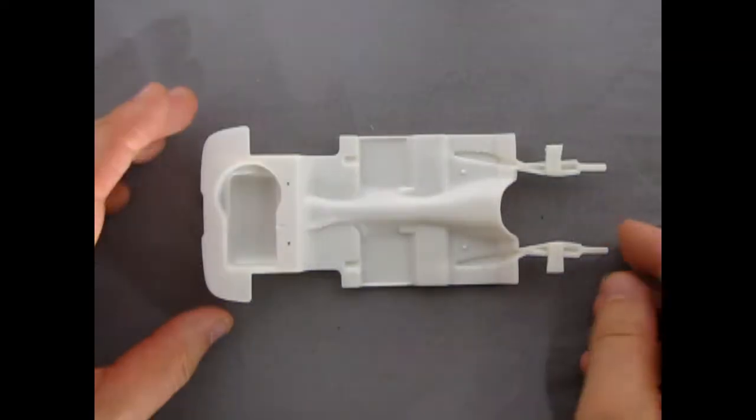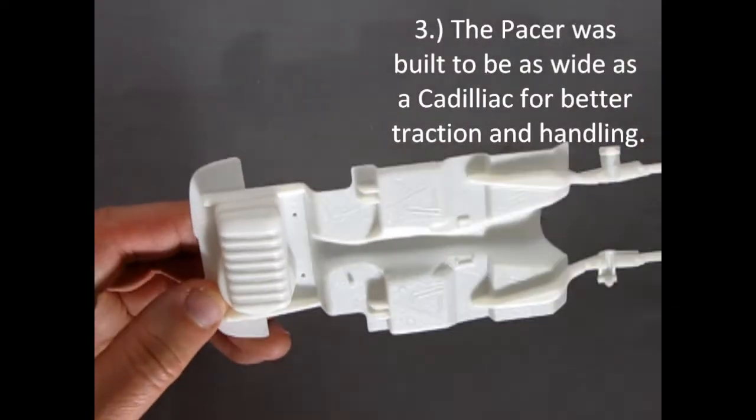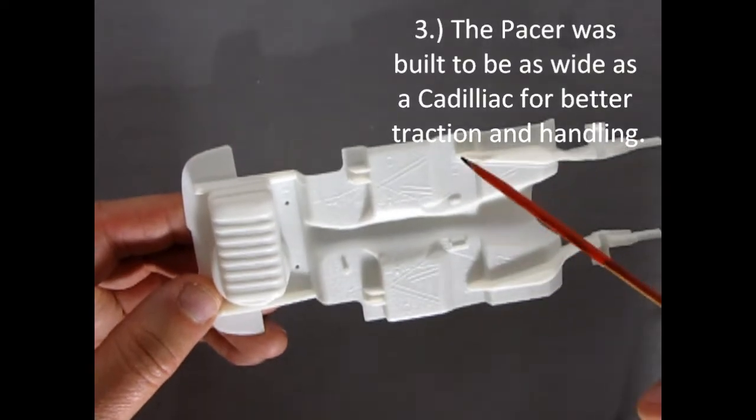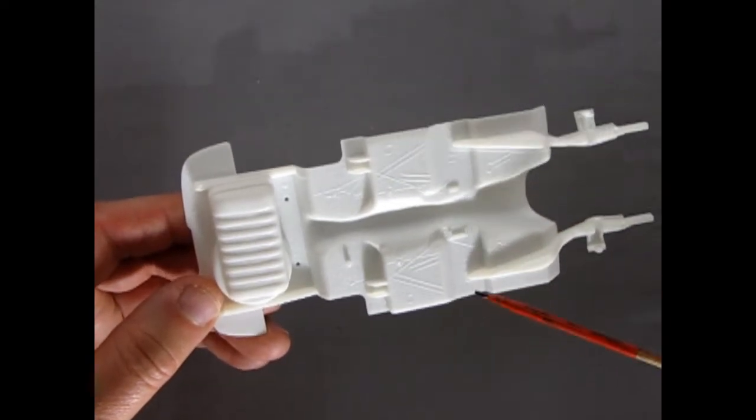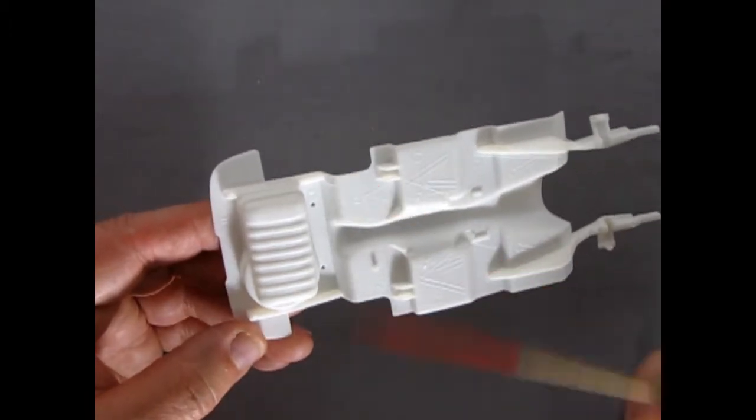And speaking of that chassis, here it is. Now AMC used a unibody on these cars back in the day. So you'll see that the frame rail, it stops about here. And then that would carry on to the side panels of the body. And then there it is on the back.